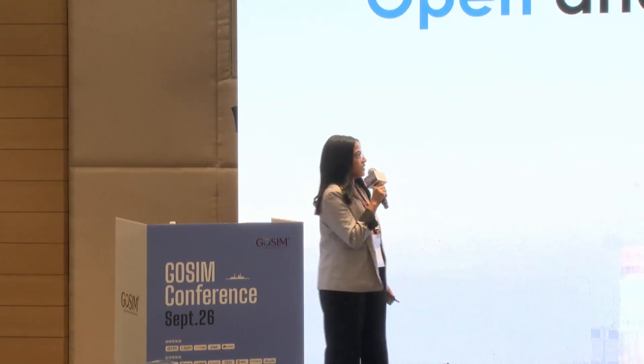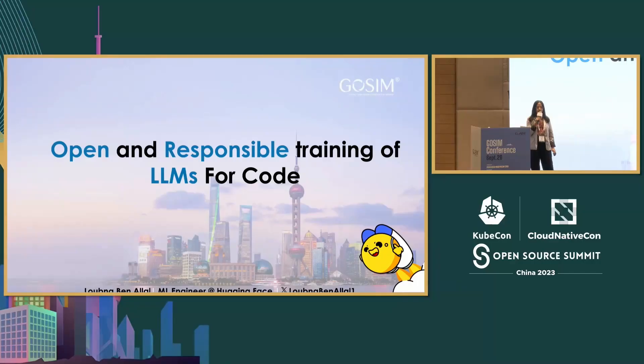This is a very trendy topic in machine learning right now, just like AI and LLMs. It feels like everyone is focusing on getting strong performance, but an important aspect is getting overlooked, which is the responsible development of these models. Today, I'm going to tell you how at BigCode we try to combine both: a strong code generation model, but also developed in a very open, transparent, and responsible approach.